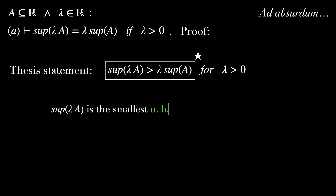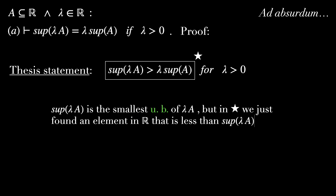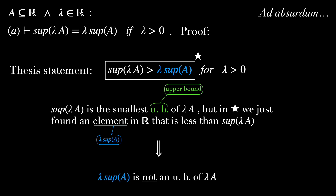Notice that the supremum of lambda A is, by definition, the smallest upper bound of lambda A. But in the star inequality, we just found an element in R that is less than the supremum of lambda A. This element is lambda supremum of A, and thus it must not be an upper bound of lambda A, since the supremum is always the smallest among all the upper bounds.